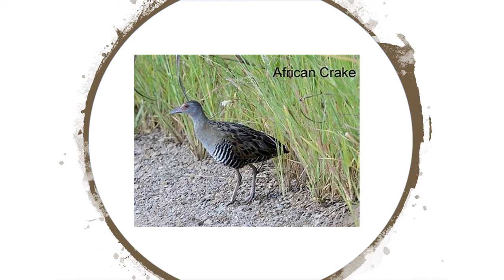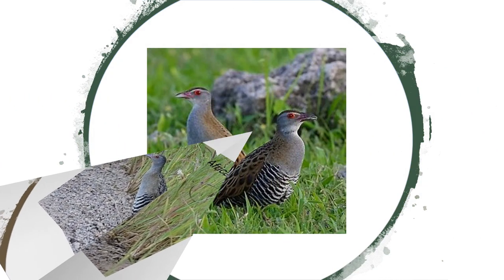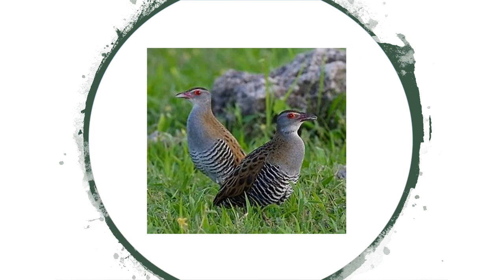It will chase faster moving prey, reach up to take food from plants, and wade to pluck food items from the water. Crop plants such as rice, maize and peas may sometimes be eaten, but this bird is not an agricultural pest species.